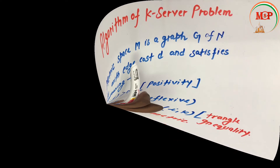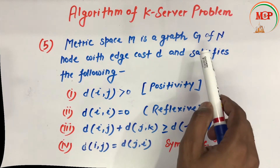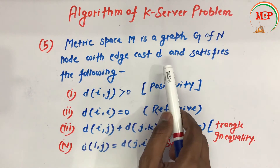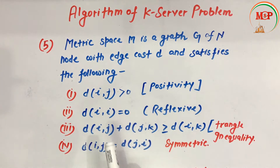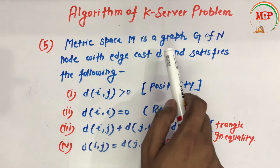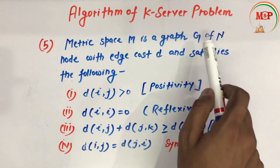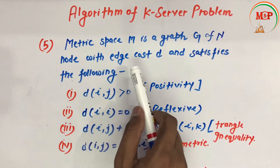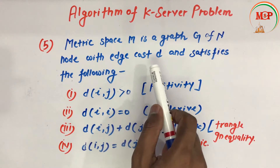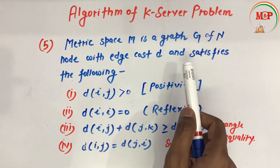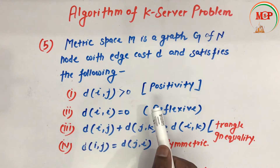The metric space M is a graph G of N nodes with edge cost d, and it must satisfy the following conditions for the k-server problem. The metric space is represented as a graph which has a set of nodes or vertices, with edge cost d, and this graph must satisfy the following conditions.